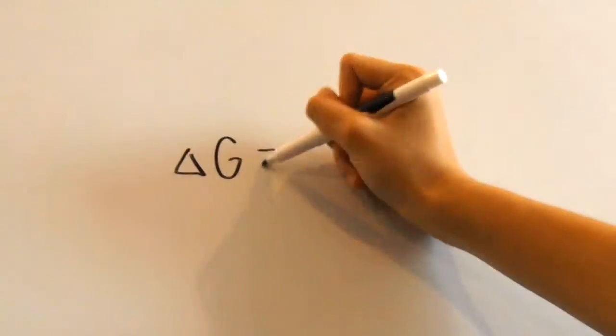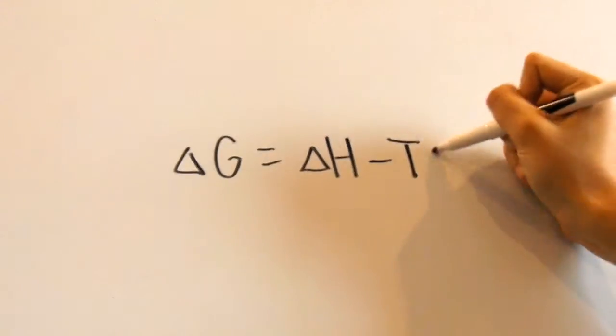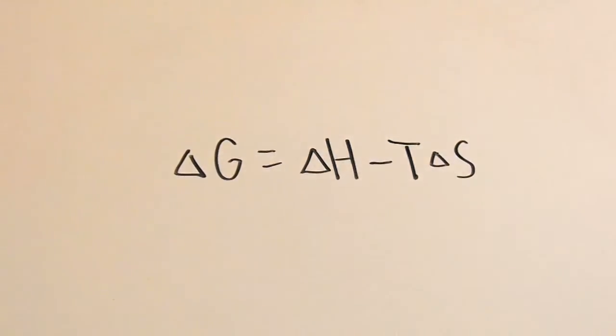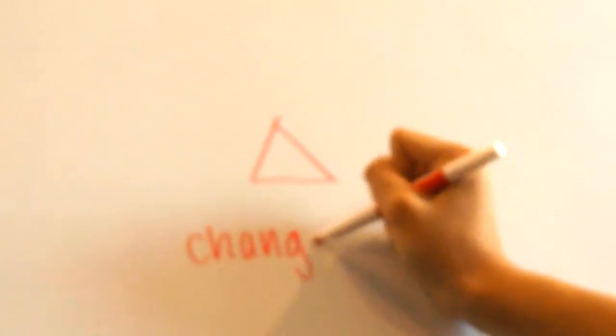Here's the actual equation. Delta G equals delta H minus T delta S. The delta symbol stands for change of.